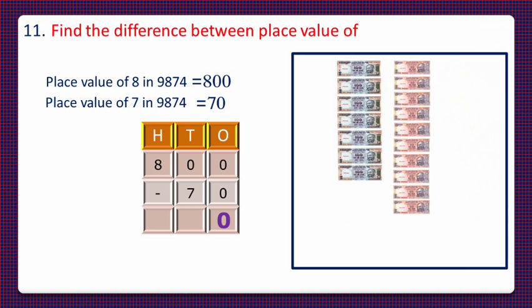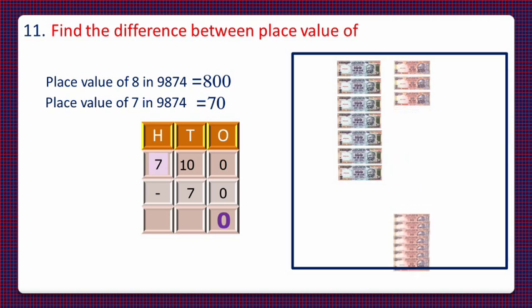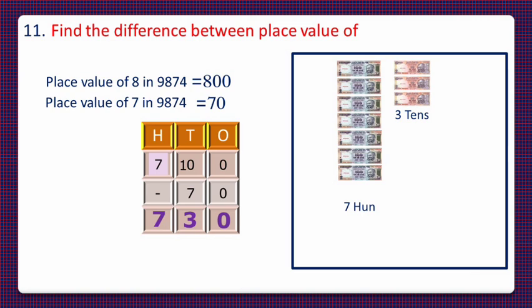To subtract 7 from 0 tens, we convert a 100-rupee note into 10 ten-rupee notes, so hundreds reduce from 8 to 7. On subtracting 7 from 10 tens we are left with 3 tens, so we write 3 in the tens column. With 7 hundreds remaining, we write 7 in the hundreds column, so 730 is the difference of both numbers.